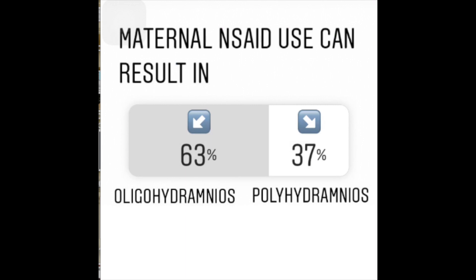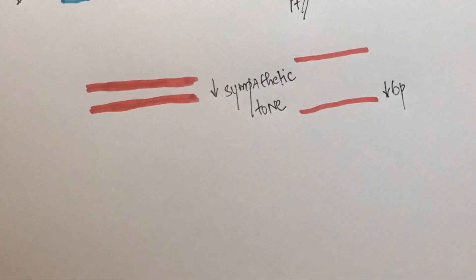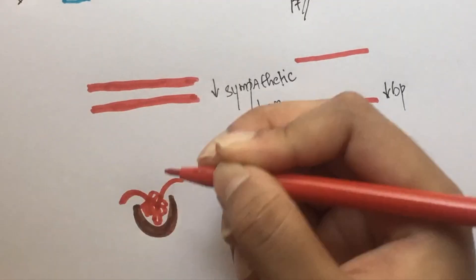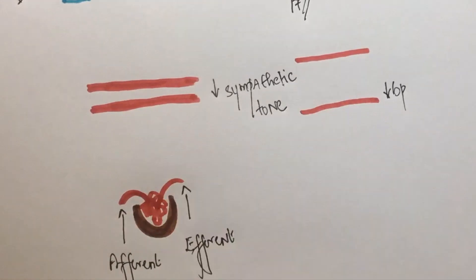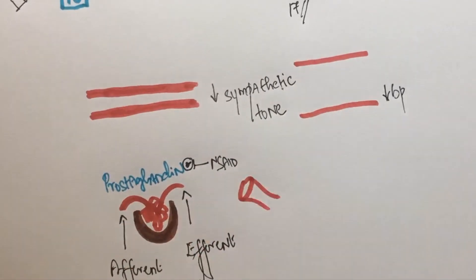Question number three: maternal NSAID use can result in oligohydramnios or polyhydramnios. This is the glomerulus, this is the afferent arteriole, and this is the efferent arteriole. Prostaglandins dilate the afferent arteriole. NSAIDs block the action of prostaglandins.